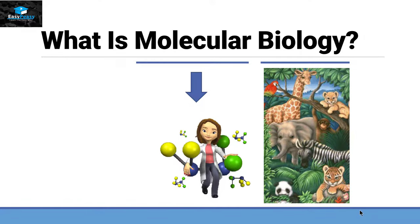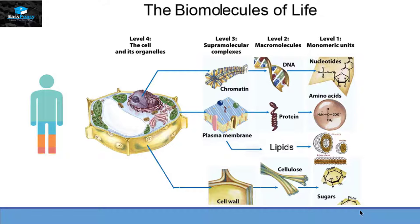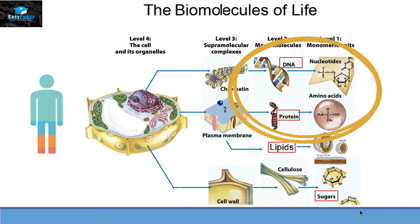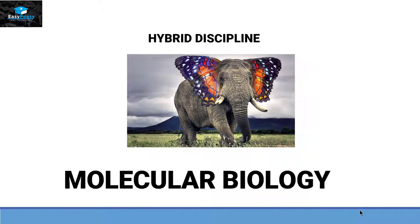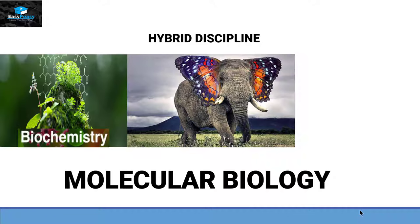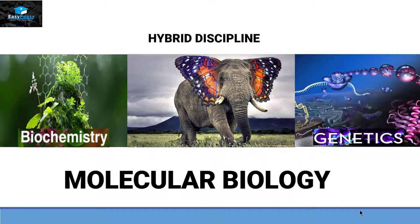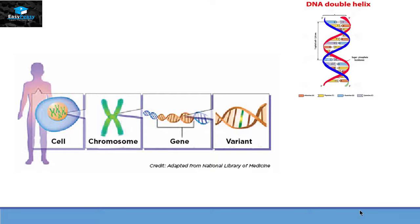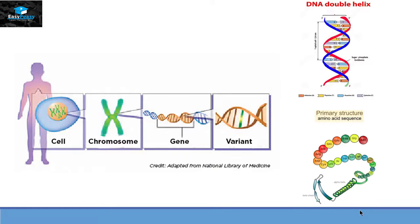Inside our cell, we have four different types of biomolecules: DNA, proteins, lipids, and sugar. But molecular biology is mainly focused on DNA and protein. The reason behind this is that molecular biology is a hybrid discipline, and it originated from biochemistry and genetics. So in the chromosomes, we have two different types of biomolecules present, and that is DNA and protein.